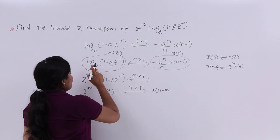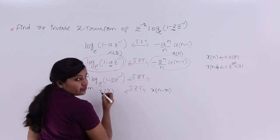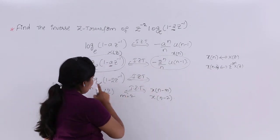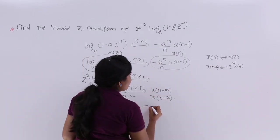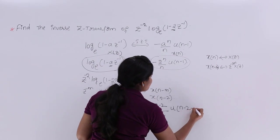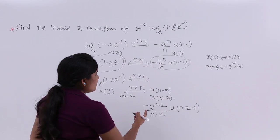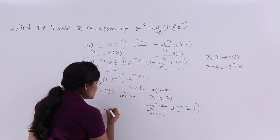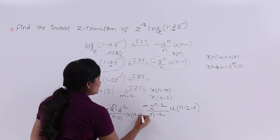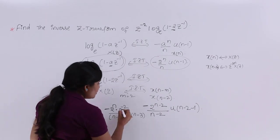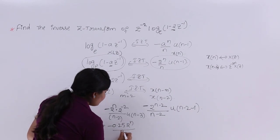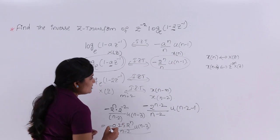Here n-M means: comparing the two expressions, in place of M I have 2. So the answer is x(n-2), which means wherever n appears we replace it with n-2. So x(n-2) = -(2^(n-2) / (n-2)) * u(n-3). Now 2^(n-2) = 2^n * 2^(-2) = (1/4) * 2^n, and 1/4 equals 0.25. So the result is -0.25 * (2^n / (n-2)) * u(n-3).